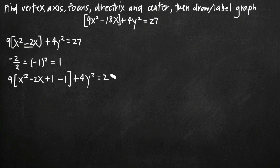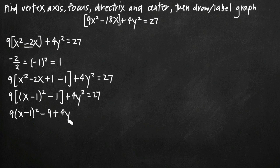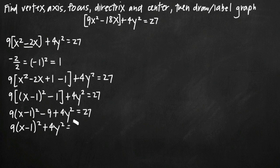Then we have 4y squared equals 27. Now we can take x squared minus 2x plus 1 and factor it to get x minus 1 squared. Then distributing the 9 across the parentheses gives us 9 times x minus 1 squared minus 9 plus 4y squared equals 27. Adding 9 to both sides removes the constant from the left-hand side.